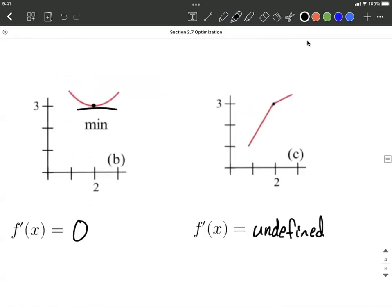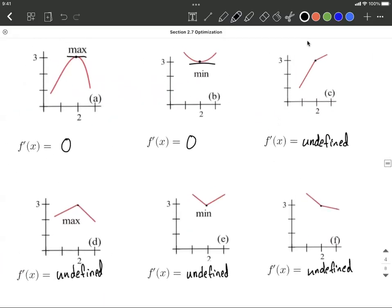So we have a few rules to get to on this. Maximums and minimums can only occur if the first derivative is either equal to 0 or undefined. But just because it's equal to 0 or undefined doesn't guarantee that you're going to get a maximum or minimum.